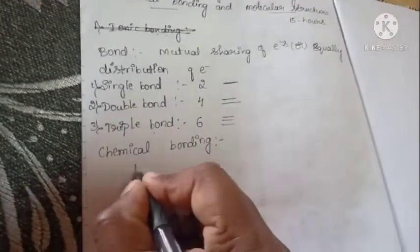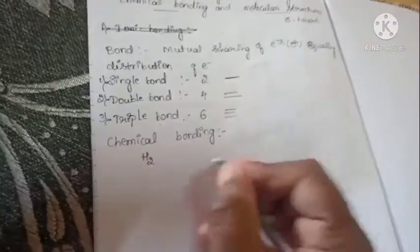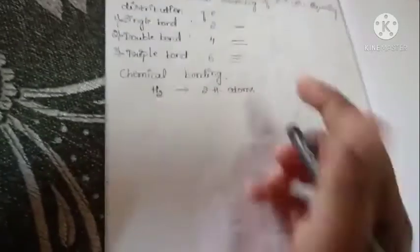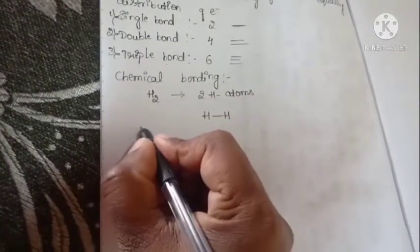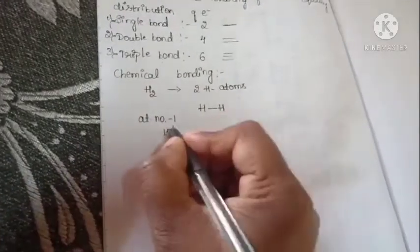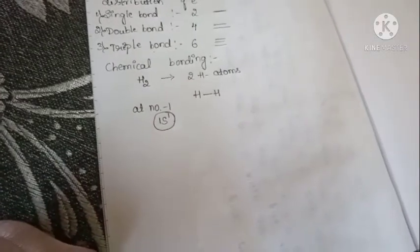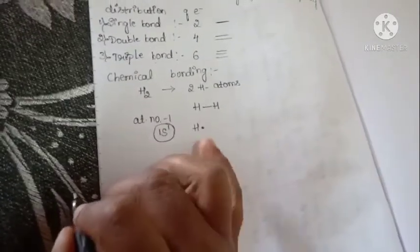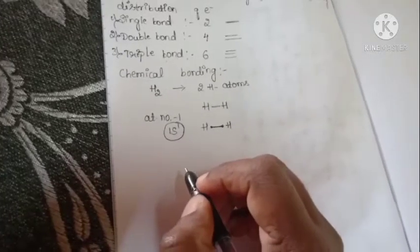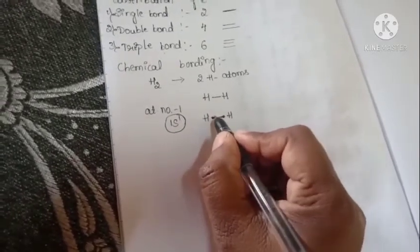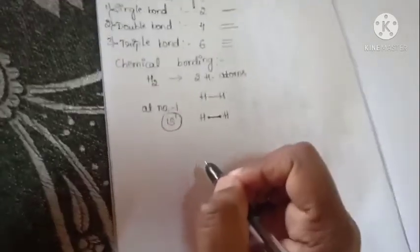For example, we have a hydrogen molecule. It has two hydrogen atoms. It forms a single bond. Hydrogen's atomic number is 1. The electronic configuration is 1s1. In the outermost shell of hydrogen it has one electron. One hydrogen has one electron and the other hydrogen has one electron — they mutually share, forming a single bond between the two hydrogen atoms.